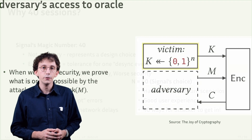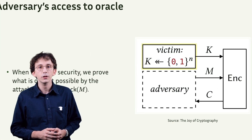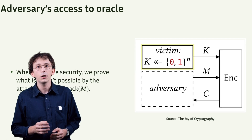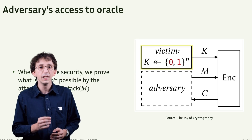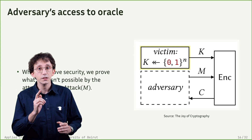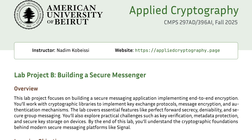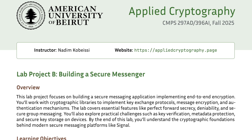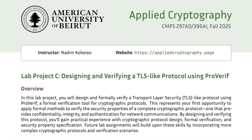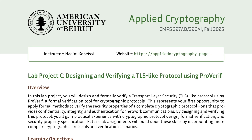We'll start with provable security — the rigorous mathematical framework that lets us make precise statements about what our systems can and cannot guarantee. We don't stop at theory; we bridge the gap to real-world systems. In our lab sessions, you'll build real systems, formally verify protocols, ensuring mathematical certainty of their security properties.